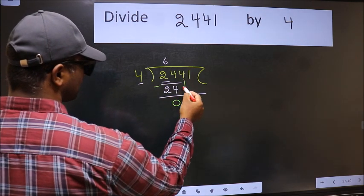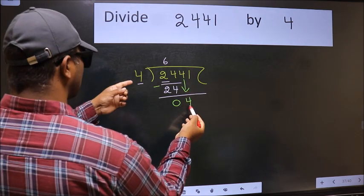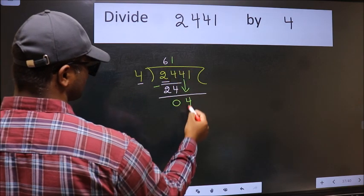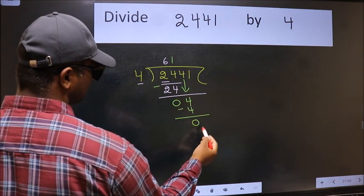After this, bring down the next number, so 4 down. When do we get 4 in the 4 table? 4 times 1 is 4. Now we should subtract. We get 0.